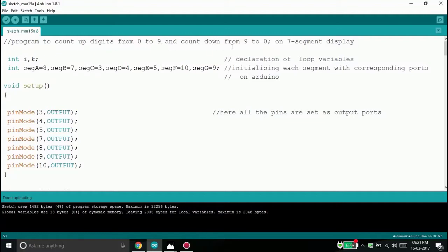Here I have declared the loop variables i and k which I will use later on in my program. Now I have initialized all the 7 segments with its corresponding port numbers on the Arduino.